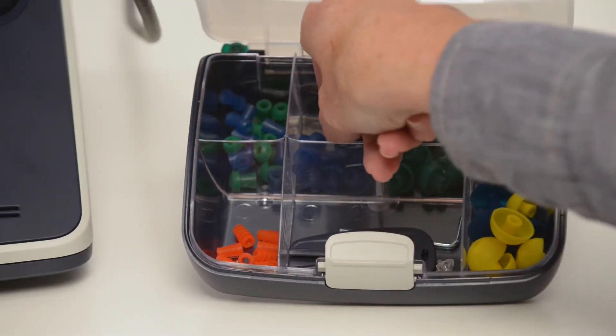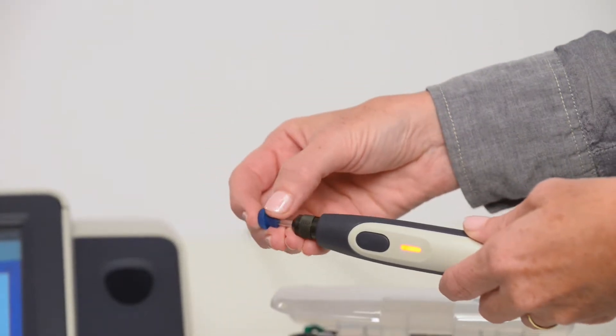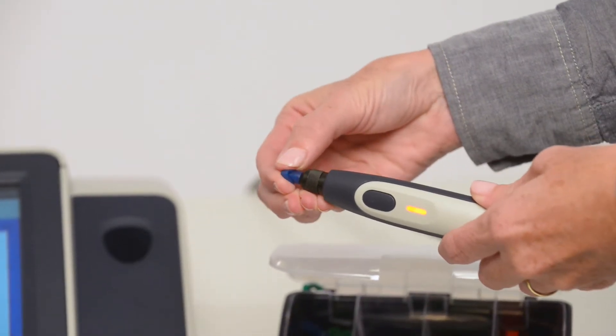Choose an ear tip based on ear canal size. Place it on the probe tip. Make sure the ear tip is pushed down to the end.